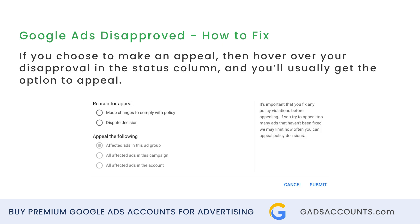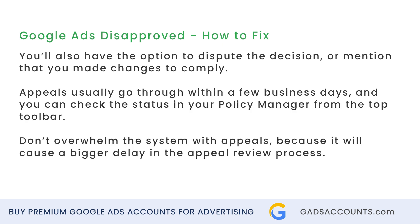If you choose to make an appeal, then hover over your disapproval in the status column, and you'll usually get the option to appeal. Click Appeal and select which ads you'd like to appeal. You'll also have the option to dispute the decision or mention that you made changes to comply. Appeals usually go through within a few business days, and you can check the status in your Policy Manager from the top toolbar.